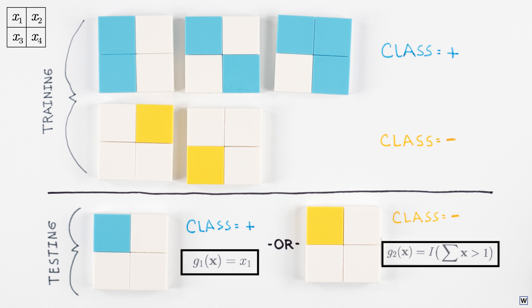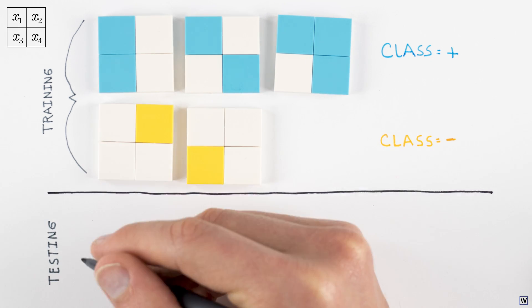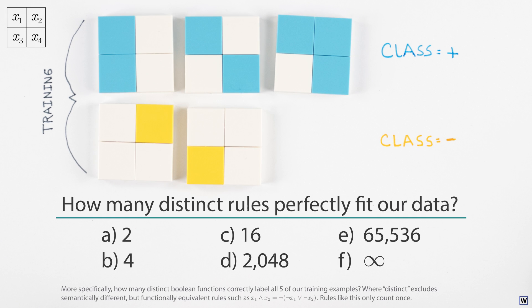We found two rules that perfectly fit our training examples. Now, are there any more? If so, how many are there? This problem is really worth thinking about, so let's make it multiple choice and we'll sort out the answer next time.